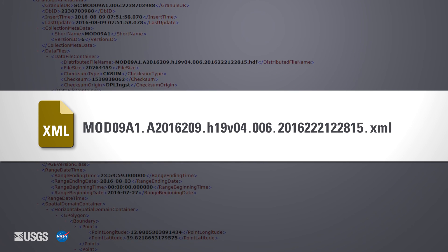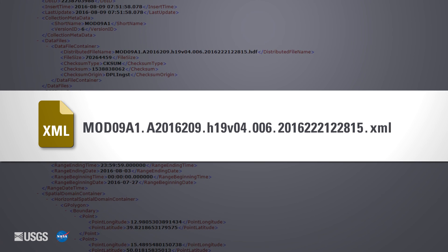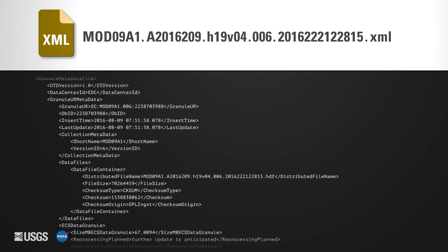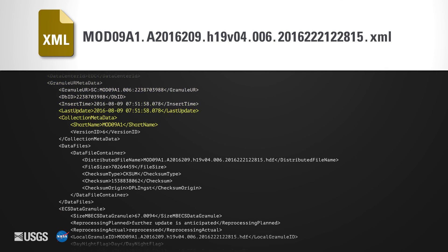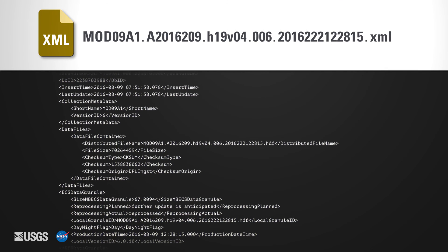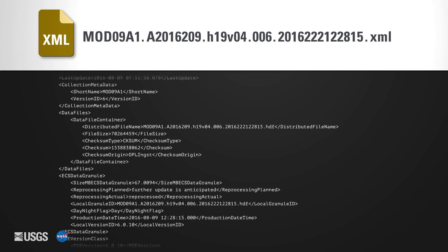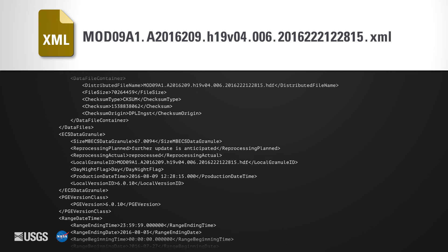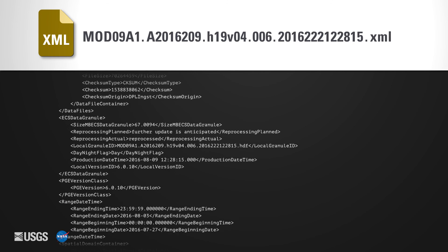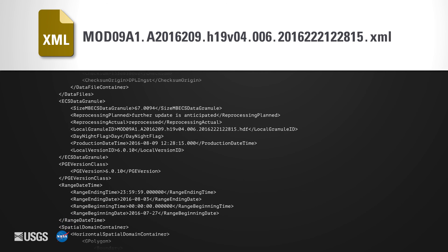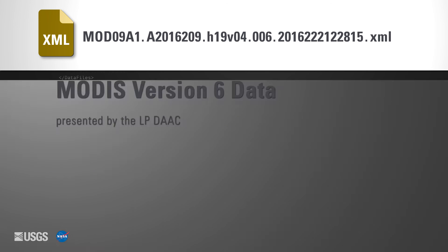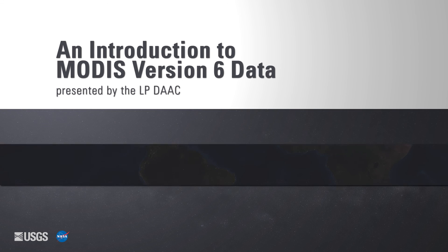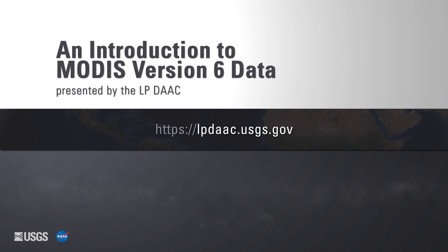Another great place to find information about the data is the external metadata file in XML format. The XML file is available through any data access client used to download MODIS Version 6 data. The metadata is data about the data — it provides useful information about a specific granule. The metadata includes the data product DOI link, which is needed to properly cite the data, as well as information ranging from the granule's corner coordinate boundaries to the input granules for multi-day products. Thank you for watching. To learn more about MODIS Version 6, please visit our website at lpdaac.usgs.gov.